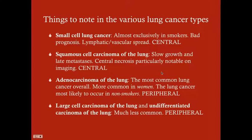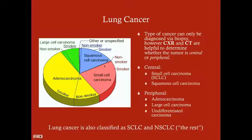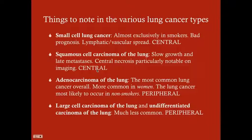With small cell lung cancer, it's almost exclusively in smokers, has a bad prognosis, is usually not diagnosed until late stage, and spreads lymphatically and vascularly — it's a central cancer. Squamous cell carcinoma of the lung has slow growth and late metastases, giving it a slightly better prognosis. On imaging, central necrosis may be noted in squamous cell carcinoma, though this isn't specific to it.